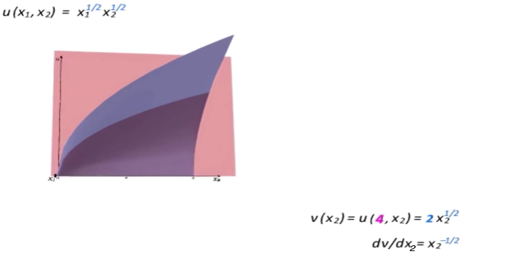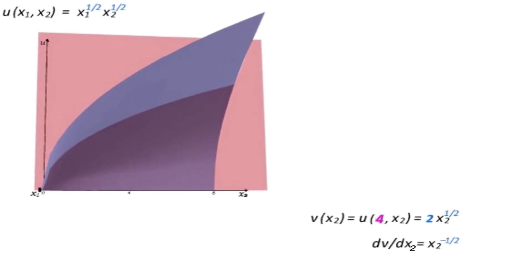This is also called the partial derivative of the original function u with respect to x2, evaluated where x1 is equal to 4. We can therefore think of a partial derivative of a function of two variables as the slope — or the derivative — of a single variable function that's created when we hold one of the variables fixed. So far, we've found the slope of a vertical slice of the utility function by simply plugging in the value 4 for x1, creating a function of a single variable x2, and taking the derivative.